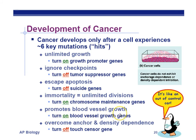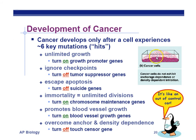Cancer also promotes blood vessel growth, called angiogenesis. Cancerous tumors have blood vessels feeding them glucose, oxygen, and other nutrients to make more copies of defective cells, causing growth. Some treatments involve inhibiting blood vessel growth to starve the tumor of nutrients. Additionally, cells must overcome anchor and density-dependent inhibition — normally when cells touch each other, they stop dividing. If that's turned off, the cell keeps making more cells and creates a tumor.